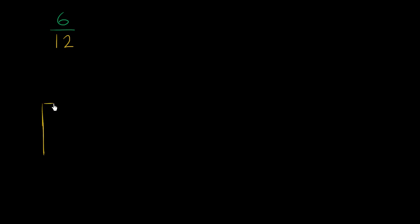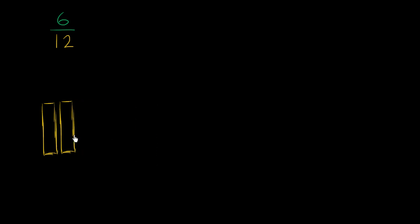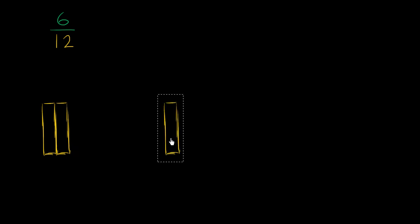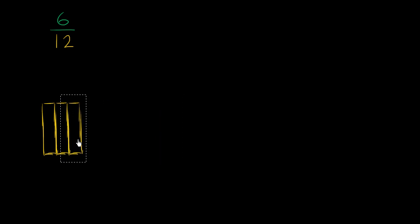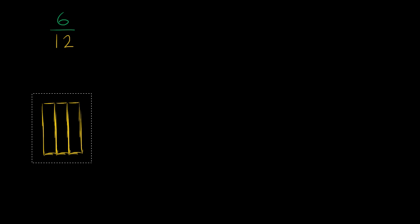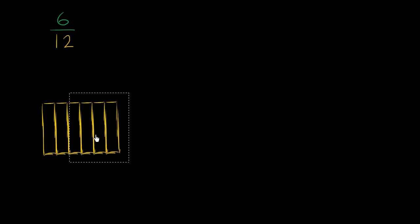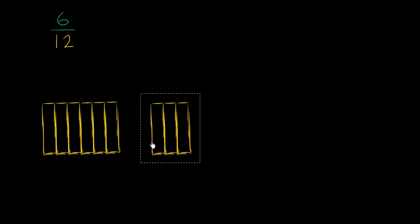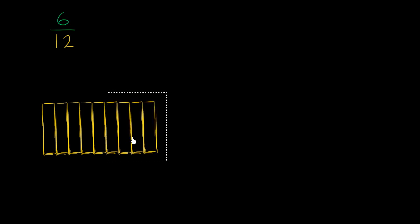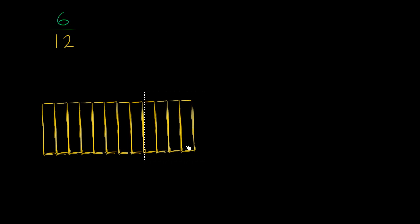Well, let's just visualize this thing. So let's say that this right over here is a twelfth. Let me try to make 12 twelfths. So copy and paste that — that's two twelfths, three twelfths. Let me just copy and paste the three twelfths. So now we have six twelfths, nine twelfths, and now we have twelve twelfths right over there.